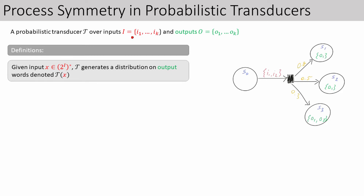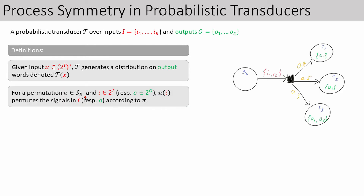An important detail of our model is that the input and output alphabets are structured. We have K input signals I1 to IK, and K output signals O1 to OK. So the input alphabet consists of sets of input signals, and the output alphabet consists of sets of output signals. Intuitively, the input and output signals are parameterized by the identities of the processes — in the things example, the identities are the platforms. This allows us to talk about permutations of those identities. For a permutation pi of the set 1 to K, and for a letter I that is a subset of the signals, the permutation pi of I is obtained by permuting the indices. For example, if we take the letter I which has signals I1 and I3, and we have the cyclic permutation sending 1 to 2, 2 to 3, and 3 to 1, then the permuted letter pi of I has the signals I2 and I1.